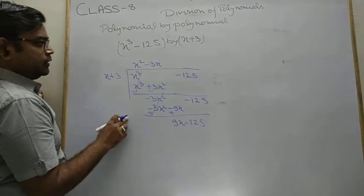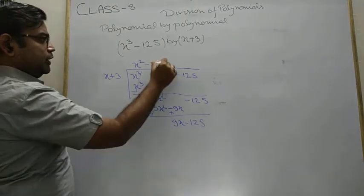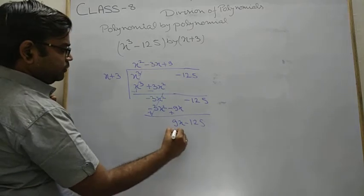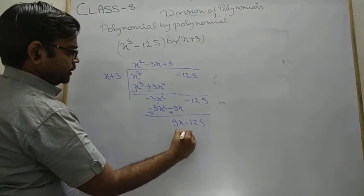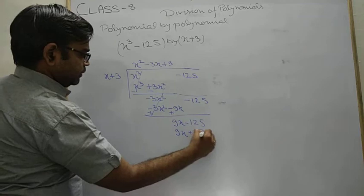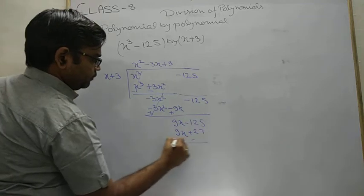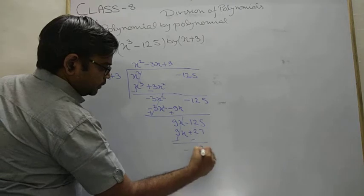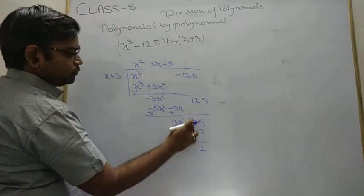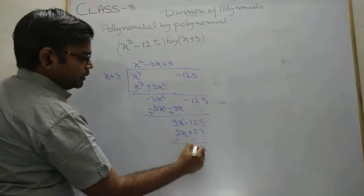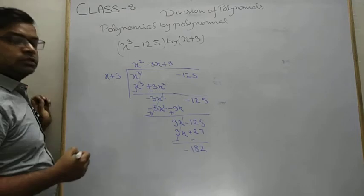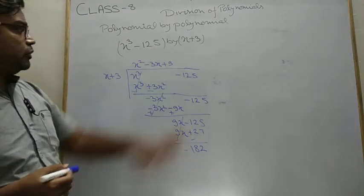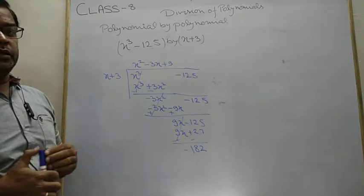So 9x is given, plus 9 if we use. Then what we have? We have plus 9x plus 27. When we subtract, we cancel, and we get minus 152 as a remainder. So this is your concept of this type of division.